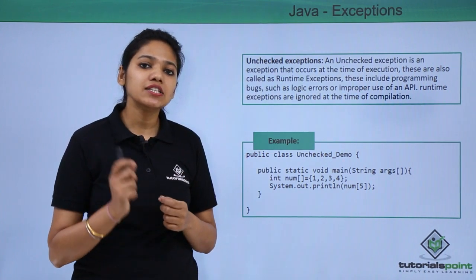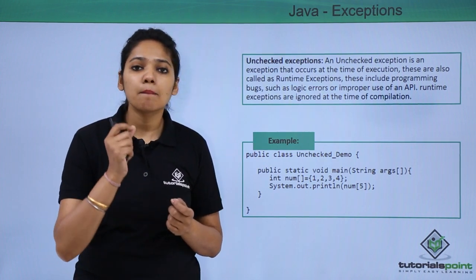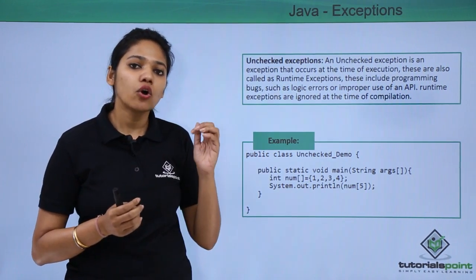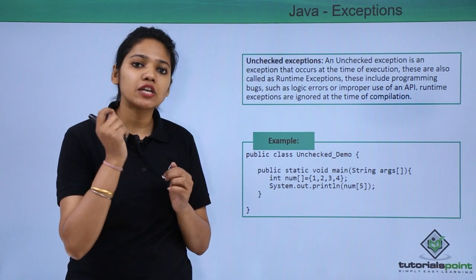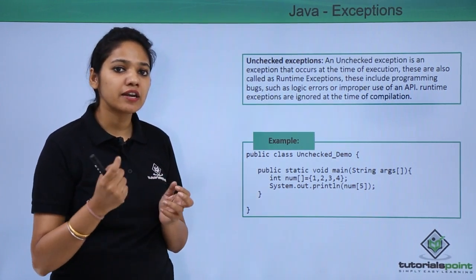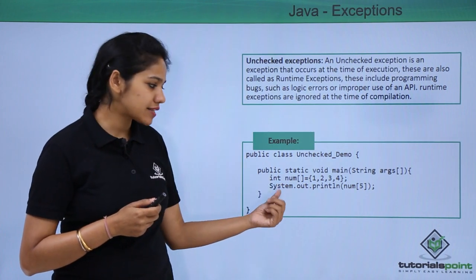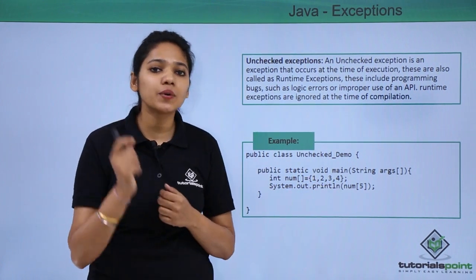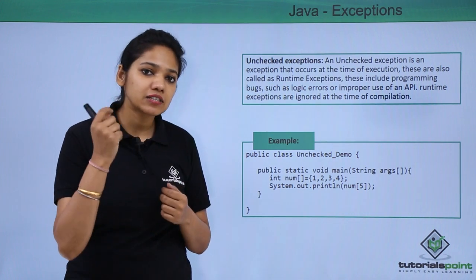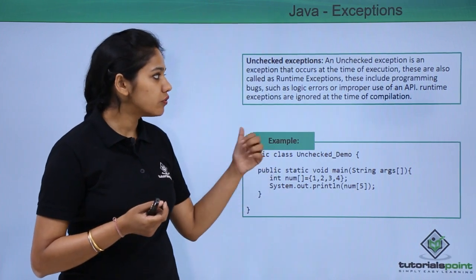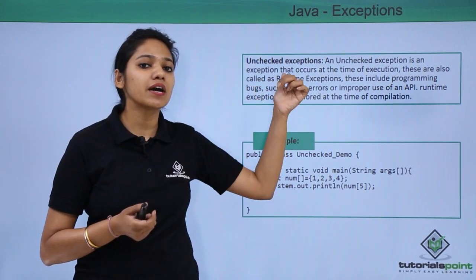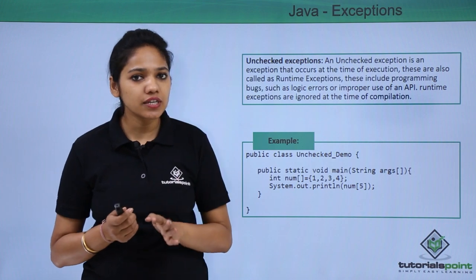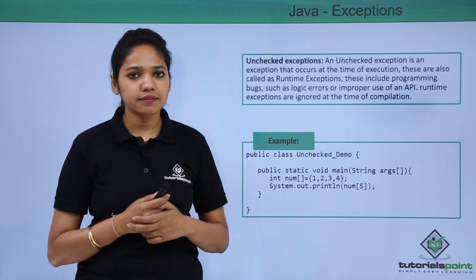Unchecked exceptions also occur within the application, but they are not rewritten — that is, they are not under your control. For example, if you define an array of length 4 but try to insert a value at index 5, it will throw an ArrayIndexOutOfBoundsException. In the example shown, we have an integer array with values 1, 2, 3, and 4, and we try to print the value at index 5, which does not exist. Such errors that occur at runtime are your unchecked exceptions. In future videos, we shall learn about checked and unchecked exceptions and how to handle each of them.